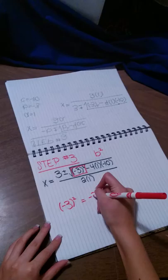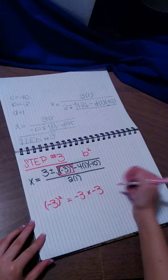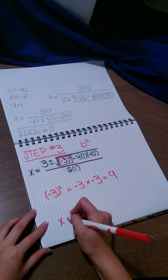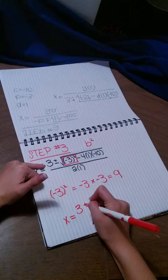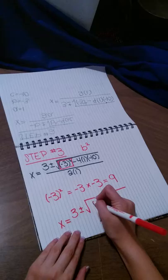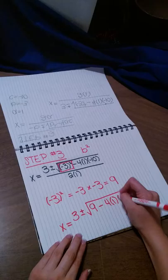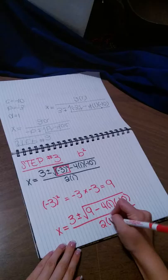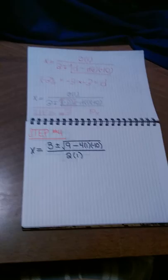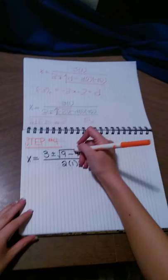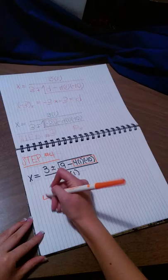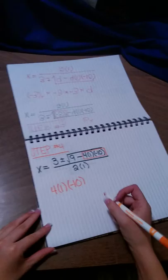Moving to step 3 — solving for b squared. Looking at our equation, the b squared is negative 3 squared, which equals negative 3 times negative 3. A negative times another negative is a positive, so we end up with positive 9. Writing it all out: x equals positive 3, plus or minus square root of 9, minus 4 times 1 times negative 10, all over 2 times 1.